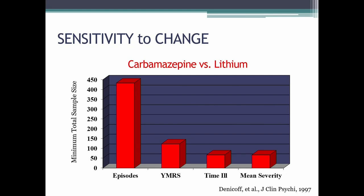The same logic applies to the Young Mania Rating Scale — there may be items on that scale you want to tap into that aren't captured in mean severity. The mean severity score comes from a simple daily rating from 0 to 4 of whether you feel manic today, averaged over time. That is very different from a scale with 11 items asking about individual symptoms, as the Young Mania Rating Scale does. So the Young Mania Scale may offer something very different — even if it doesn't appear as sensitive as mean severity, it may be exactly what you need, and it allows you to examine individual symptoms separately.